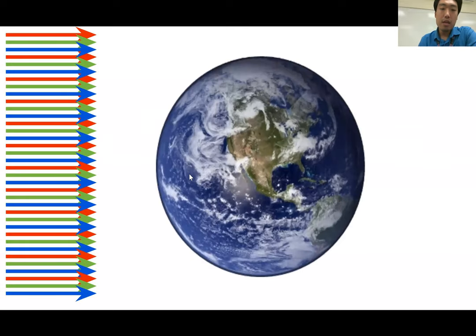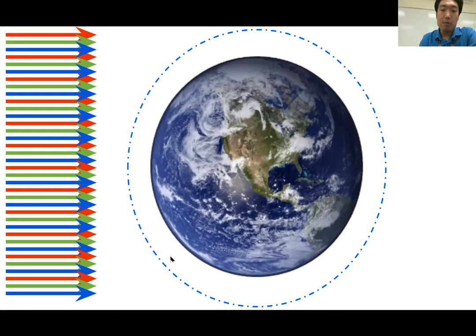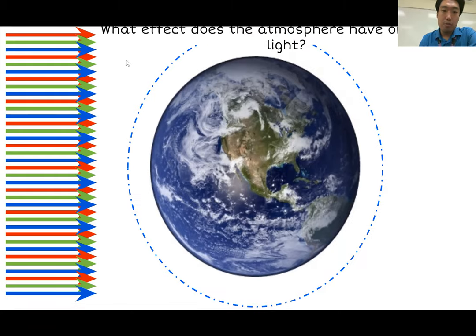All right, so here's a diagram of the sun and the earth. This is definitely not to scale. The sun is much bigger than earth. The sun gives off light and the light comes towards earth. The sun gives off white light, which is composed of all the colors of the rainbow. However, just for simplicity, we're going to simplify that down to red, green and blue. These light rays come in from the sun and they hit the earth pretty much parallel because the sun is so far away. And this blue dotted line represents the atmosphere of the earth. And so the question is, what effect does the atmosphere have on the incoming light?